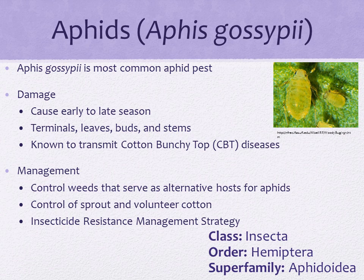The honeydew secreted by aphids can contaminate lint once bolls begin to open. As management, controlling weeds that serve as alternative hosts for aphids — including marshmallow, capeweed, and thorn apple — is available. Sprout and volunteer cotton should be controlled as they are winter hosts and may also carry over cotton bunchy top disease. Cotton aphid has developed widespread resistance to a number of insecticides, so growers should adhere to the cotton insecticide resistance management strategy.